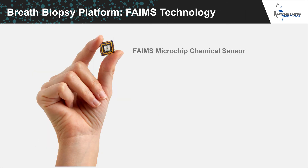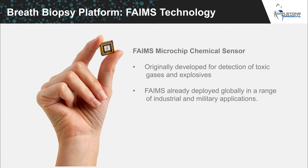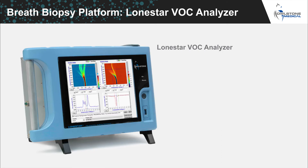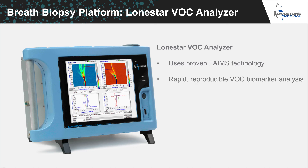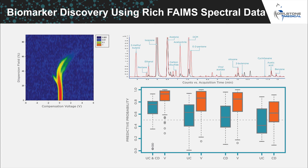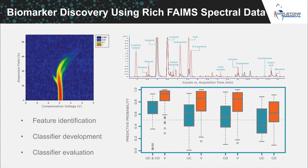At the heart of breath biopsy is the FAMES microchip chemical sensor. We originally developed the FAMES chip for the detection of toxic gases and explosives, and FAMES is now deployed globally in a range of industrial and military applications. We have taken this well-established, proven FAMES technology and incorporated it into our Lone Star VOC analyzer to provide an extremely robust and reproducible platform for the detection of VOC biomarkers in breath. A key step is taking the rich FAMES spectral data and analyzing it to identify potential new biomarkers — this involves identifying features, developing a classifier, refining that classifier, and finally evaluating the classifier's sensitivity, specificity, and statistical significance. Our data scientists have developed a machine learning approach for breath data to train algorithms and develop classifiers.